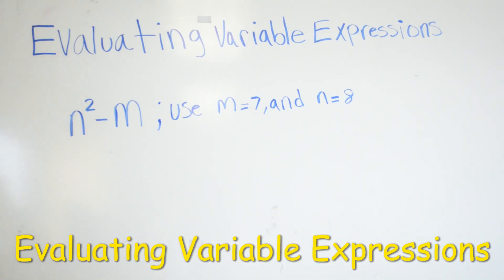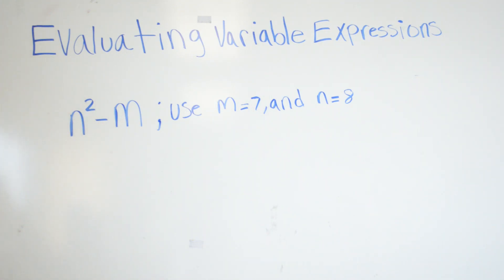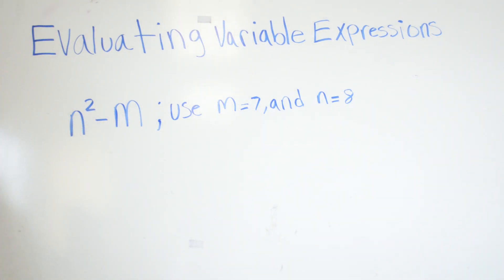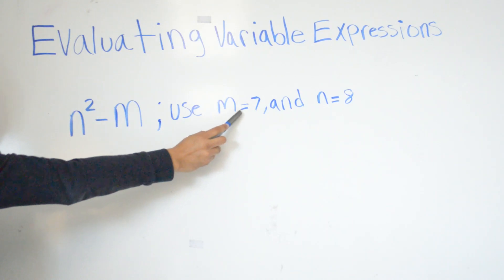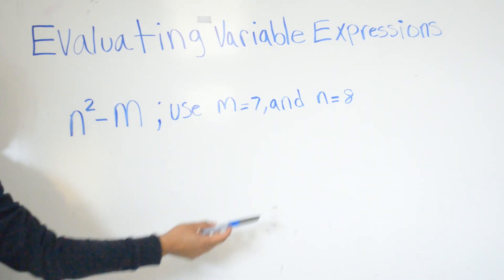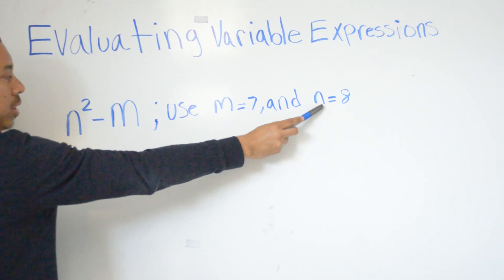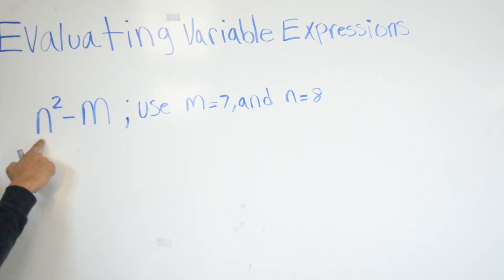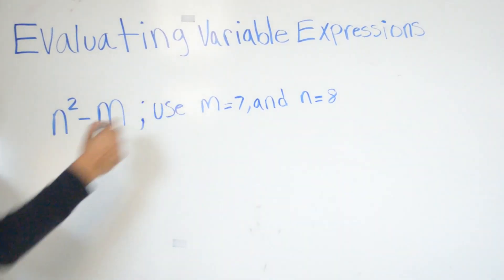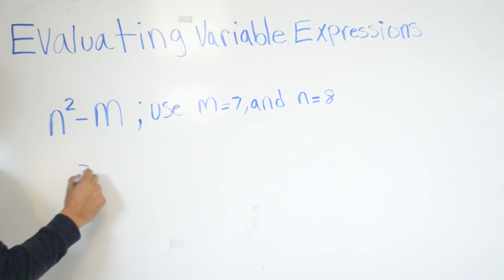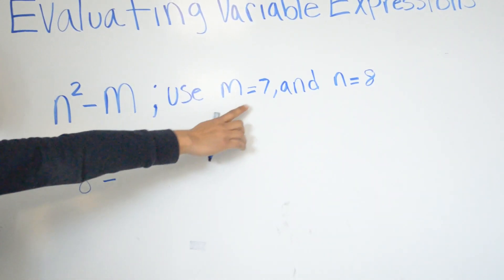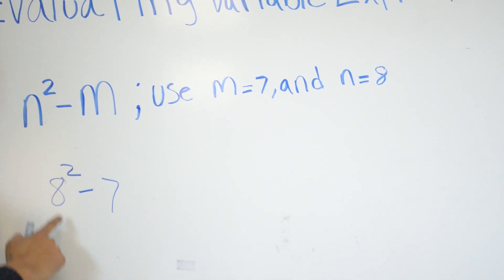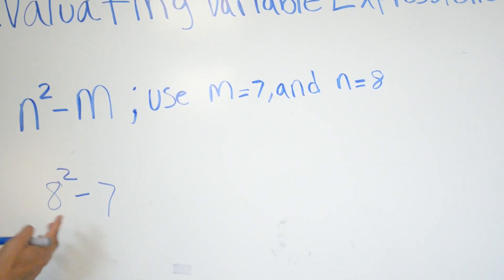Today we're going to be working on evaluating variable expressions — evaluating each using the values given. We have n squared minus m, and it's telling us that every time we see m we substitute in the number 7, and whenever we see n we substitute 8. So in this problem we're going to substitute n equals 8, giving us 8 squared minus m, which is 7.